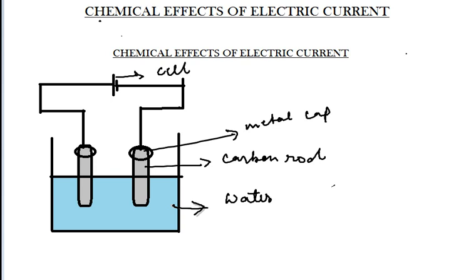In this section we will see the chemical effects of electric current — that is, what chemical effects are produced when an electric current is passed through a solution. For this we have a setup with a cell, a metal cap, carbon rods and water. The carbon rods are immersed in the water. As soon as we close the circuit, the electric current passes through it. After some time we can see that bubbles start forming near the carbon rods.